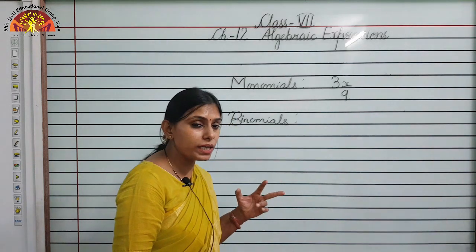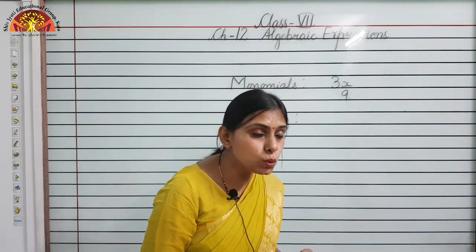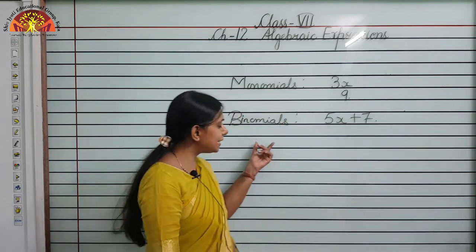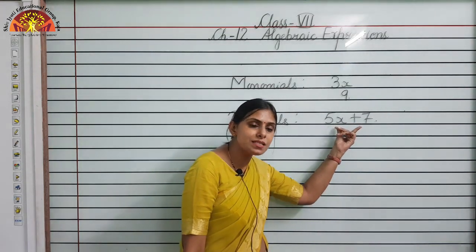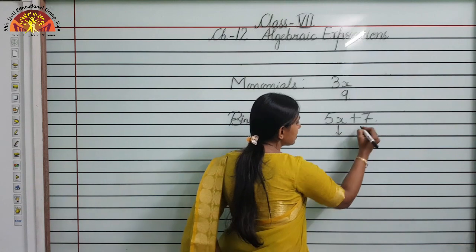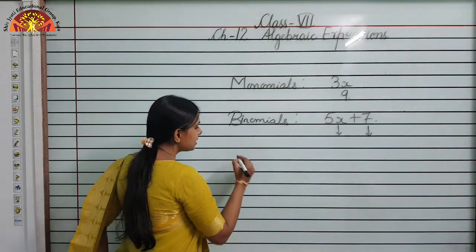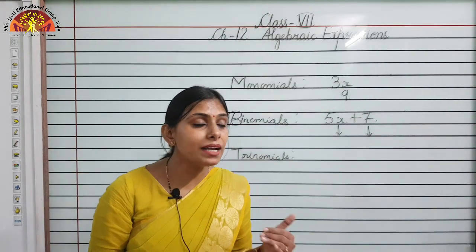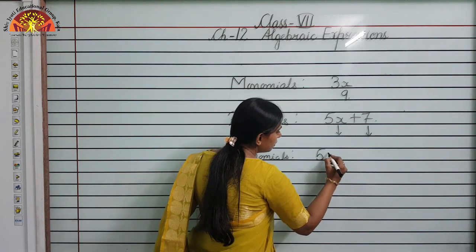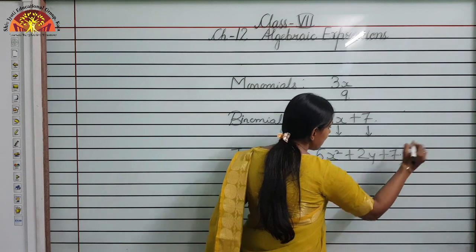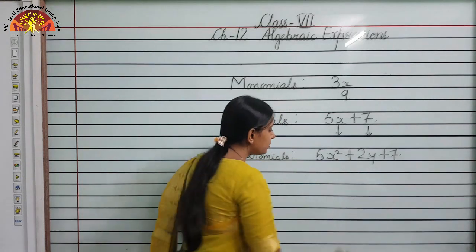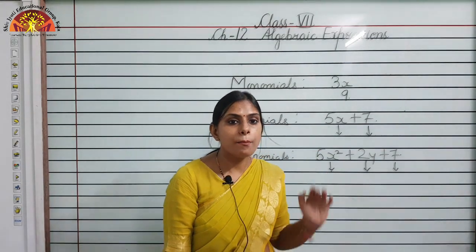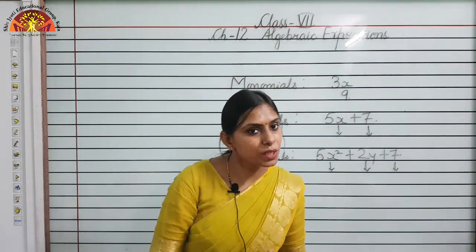A trinomial is an algebraic expression in which there are three terms. For example, 5x² plus 2y plus 7 has three terms — 5x², 2y, and 7 — so it is a trinomial. To summarize: monomial has 1 term, binomial has 2 terms, and trinomial has 3 terms.